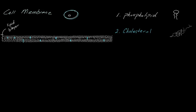The third thing that makes up our cell membrane are proteins. Proteins are actually a big one, and depending on the cell, some cells will actually have a significant amount of protein in the membrane. Proteins can take two major forms. The first is a protein that crosses the entire membrane.